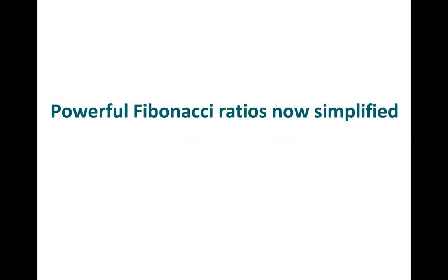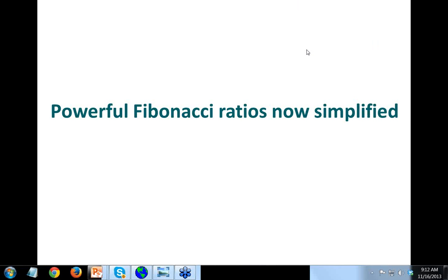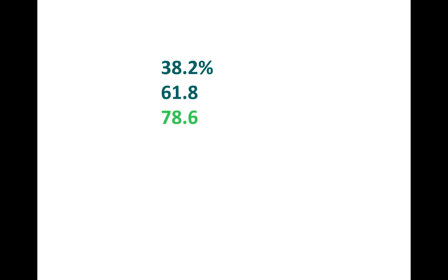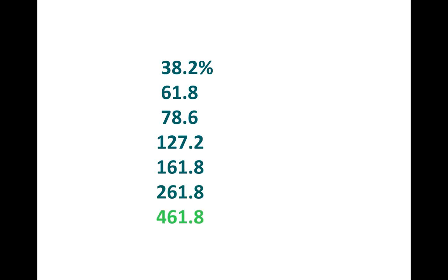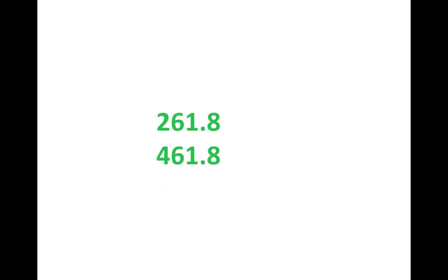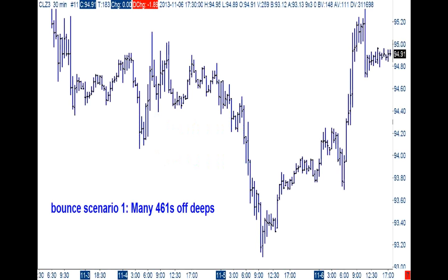Another key tool is using powerful Fibonacci ratios — but we want to simplify. A lot of people know the series: 38.2%, 61.8%, 78.6%, and extensions like 1.27, 1.618, 2.618. I like to use the 2.61 and especially the 4.61 — what I call extreme extensions. These extensions have gone the distance especially when you're coming off a deep Point C measure move pattern. These two are very powerful. When you mix and match them as I show in the book, you can pick highs and lows safely.